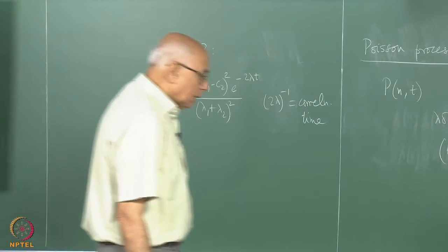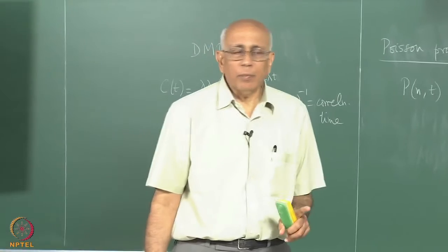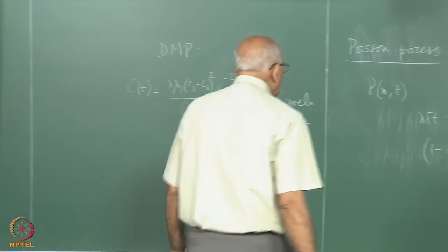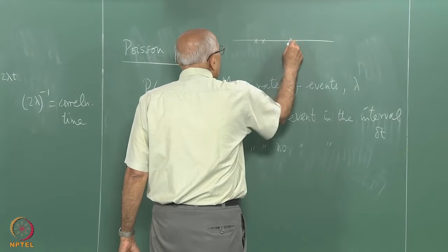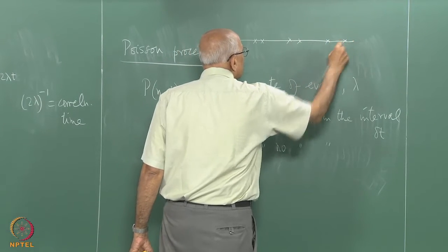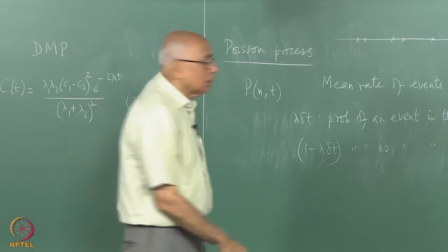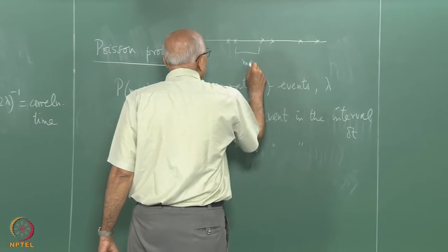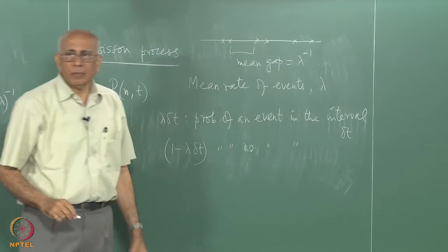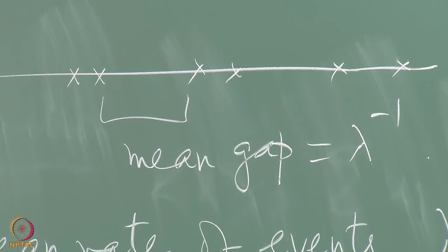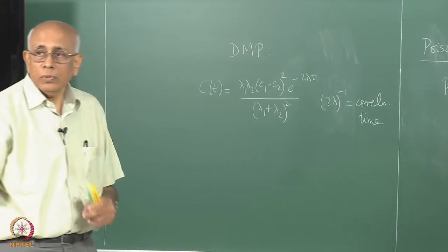The other key assumption is that the events are completely uncorrelated with each other — totally independent. If you put a cross on the time axis every time an event occurs, these crosses appear completely at random in an uncorrelated fashion. The mean time between successive events is 1/lambda, which is the meaning of saying the mean rate is lambda.